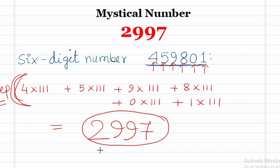This particular number 2997 is known as Kaprekar's number. Hope you liked the video. If you liked the video, please subscribe to our channel and share this video. Thank you for watching.